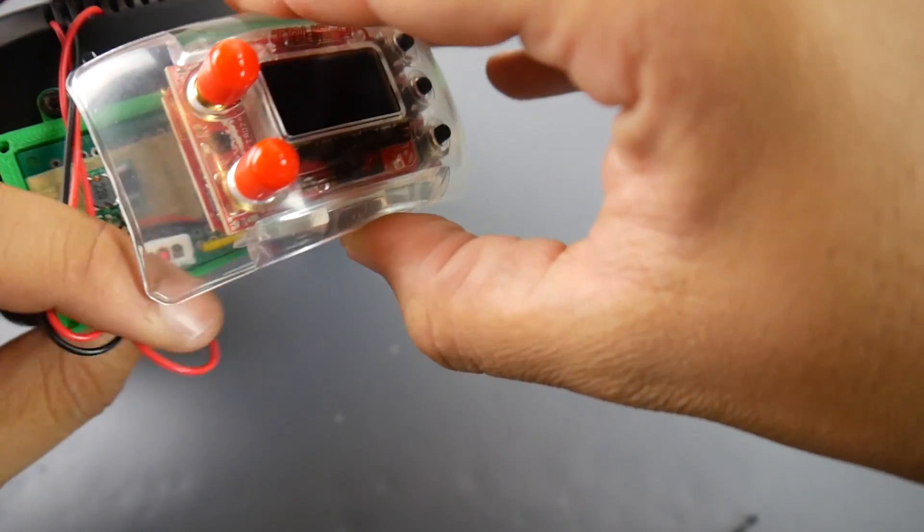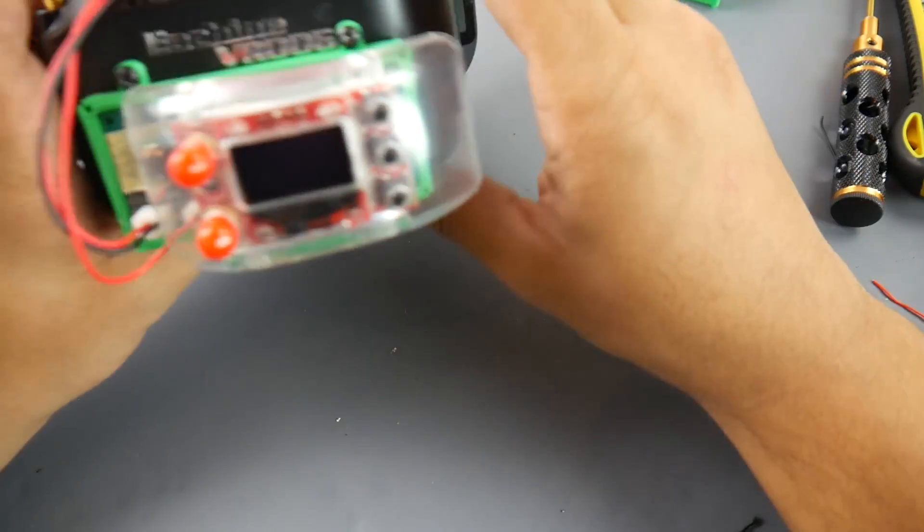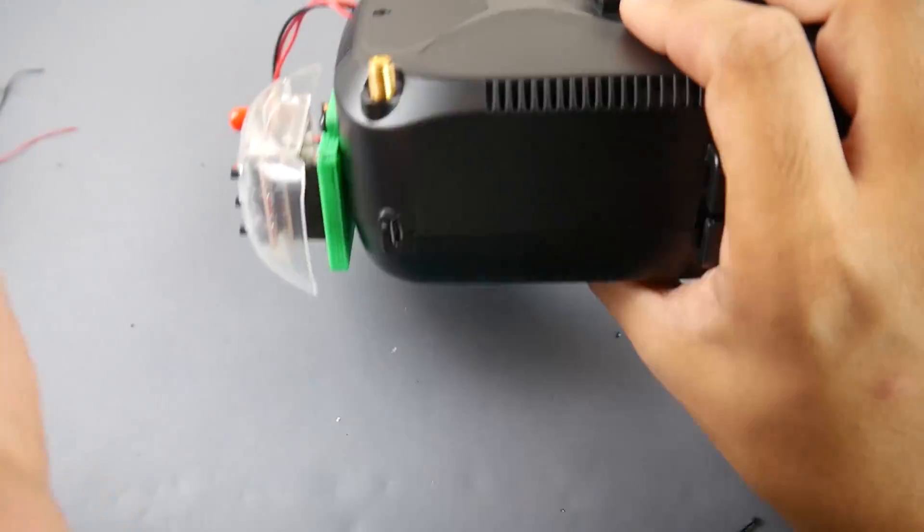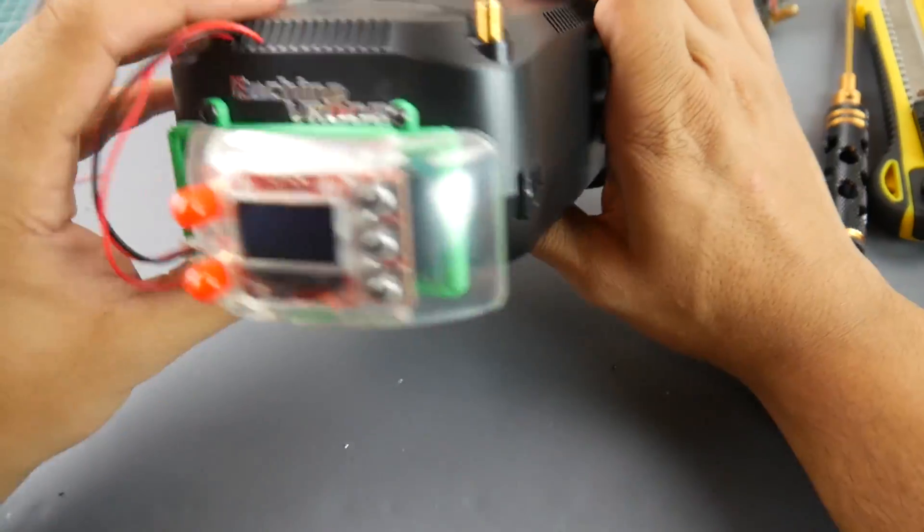So this is the 2.4 GHz version. And again, if you don't know what this stuff is, any Fatshark module will work here. So as you can tell, look at that. It looks pretty sick. So it looks pretty badass actually right now. All right. So let's boot this guy and see if we can access the menu, the OSD of this.